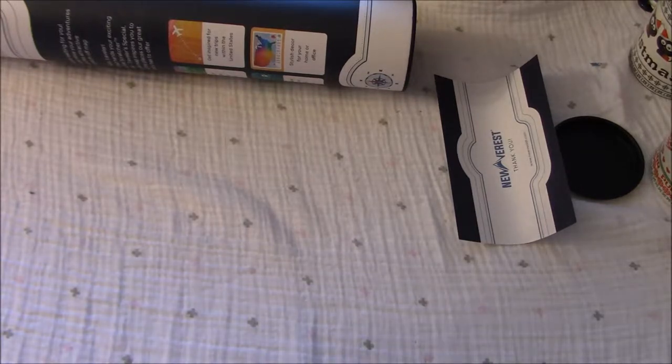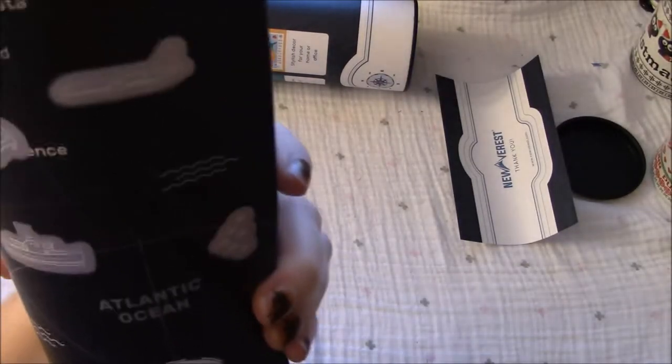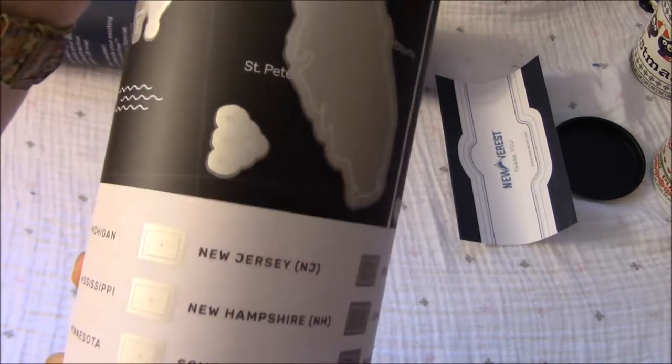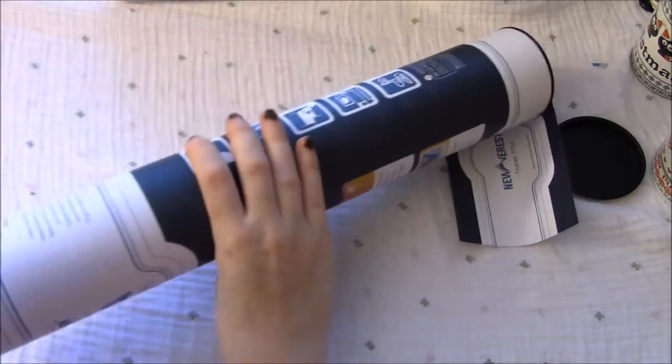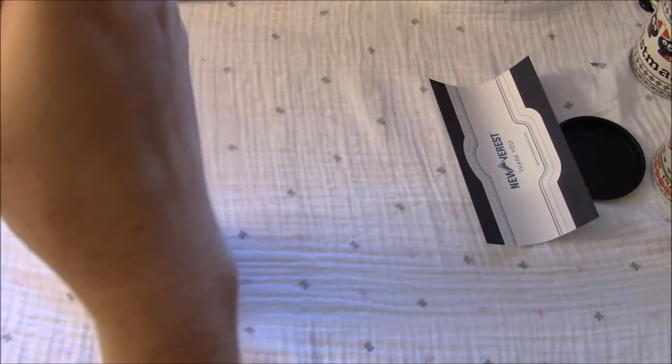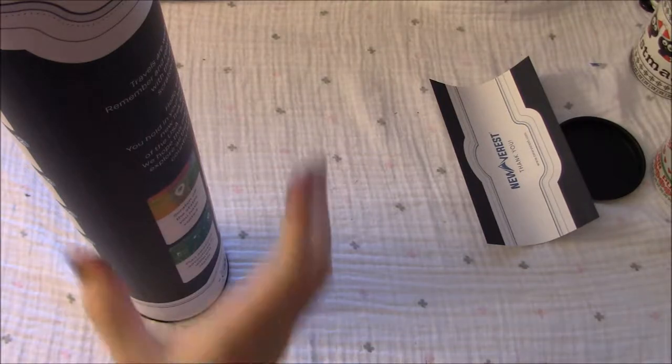All right, so this has the state name and then the capital for each of the states, so that's pretty cool. There's the airplane I was talking about, boat, some fish, dolphins, more fish. They're hard to see because it's reflecting. There's hot air balloons, it's pretty cute. Some of these have the initials. The smaller ones up here don't have the full state, it just has the initial on it, so that's interesting. All right, we're just gonna tuck this in here.